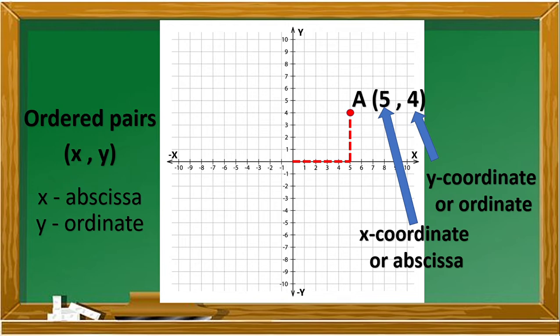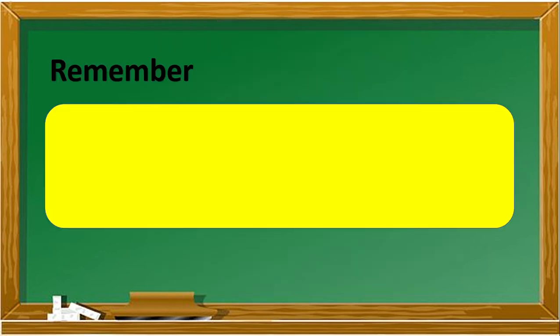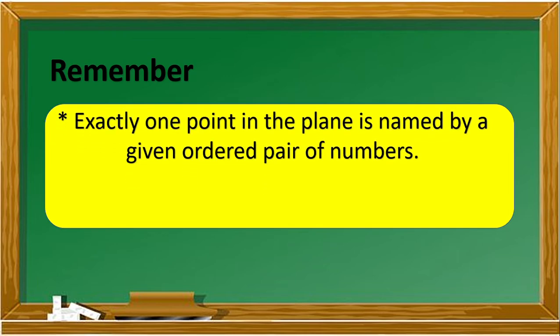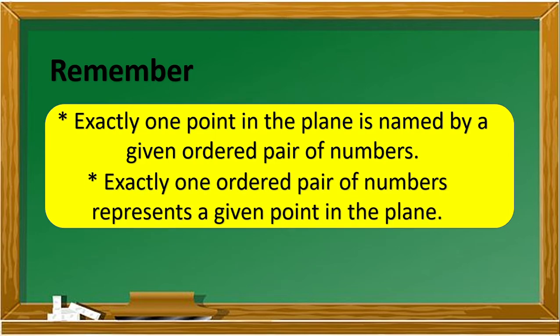Therefore, point A is named and written as point A with a coordinate of five and four. It is important to name the coordinates of a point in order. This means that the point identified by five and four is different from the point identified by four and five. It is for this reason that the coordinates of a point in a coordinate plane form an ordered pair. The origin is named as the ordered pair zero and zero. These are the two things to remember: first, exactly one point in the plane is named by a given ordered pair of numbers; second, exactly one ordered pair of numbers represents a given point in the plane.